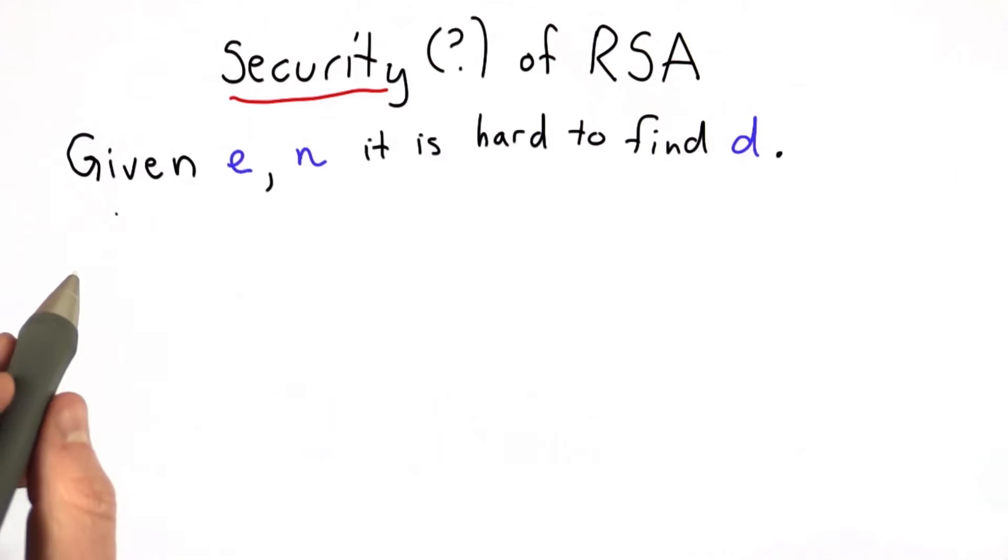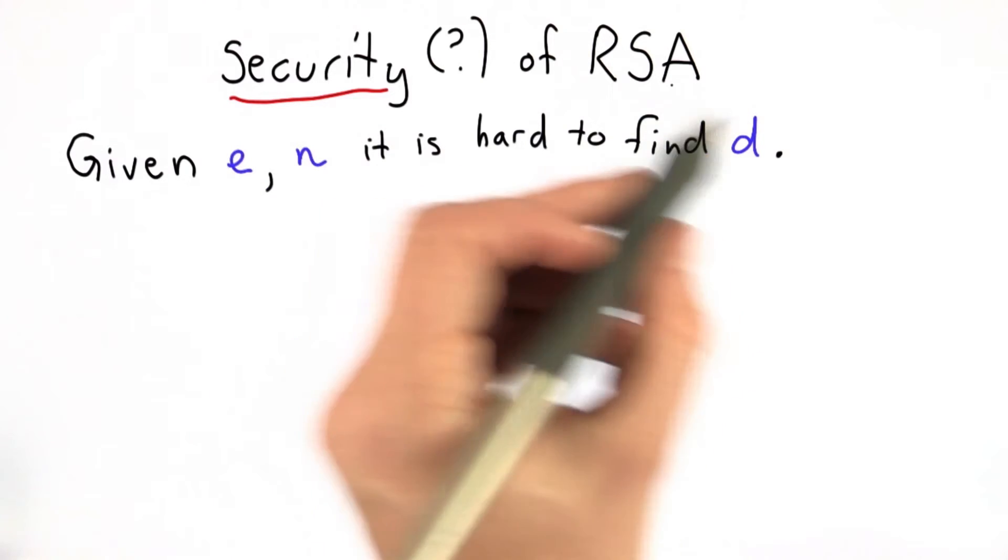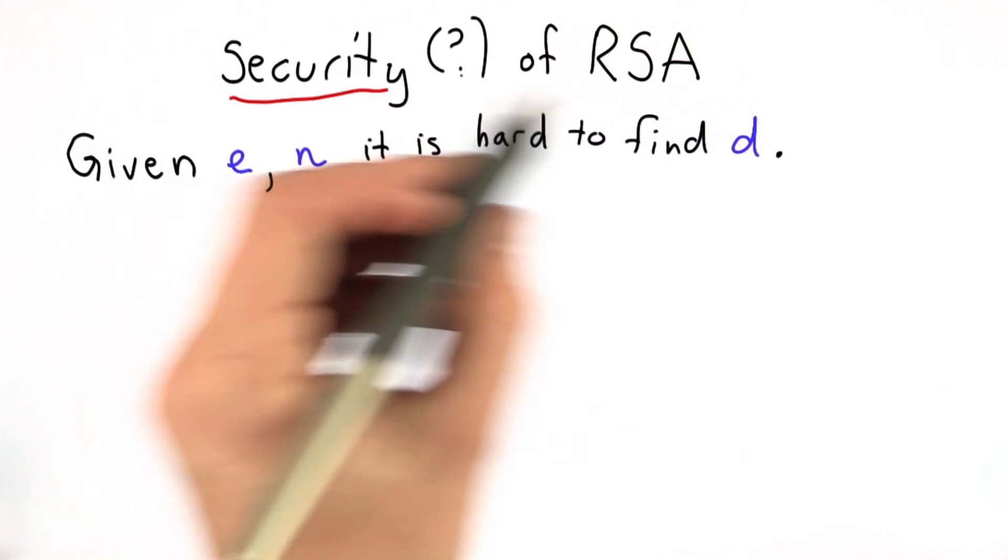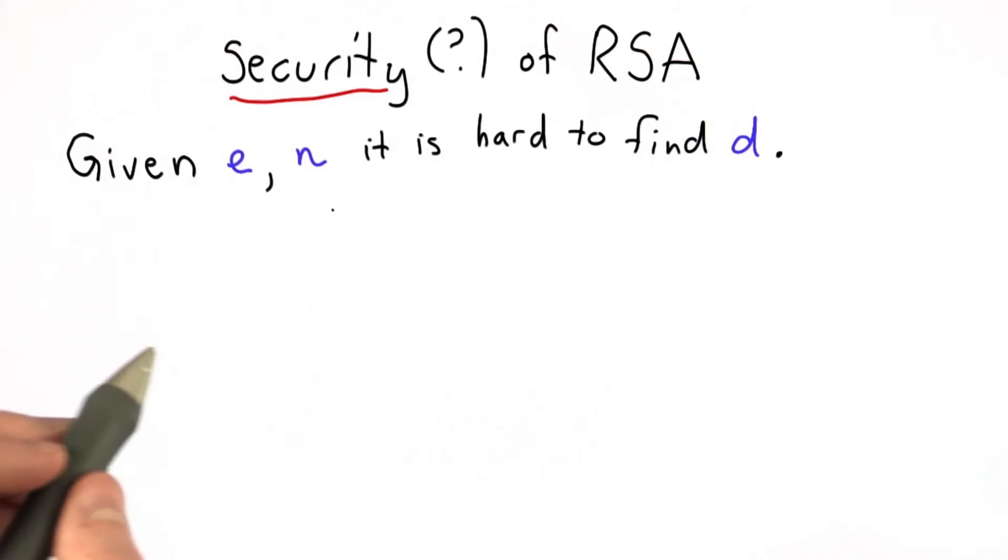We want to also know that the attacker can't learn anything about the message. This is not strong enough by itself to know that an attacker can't learn anything about the message. And in fact, we'll see there are cases where an attacker could learn something about the message without learning d.